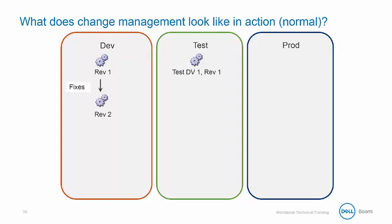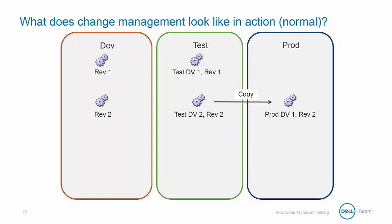The QA team found some issues in our process, so the development team was notified and they make changes to correct the issues. We now have revision 2 of the process. We deploy a new version of the process, which creates test deployment version 2, revision 2. Once the QA team is satisfied, the process is promoted from test to production using the Copy Deployment feature on the Deploy tab. This creates production deployment version 1.